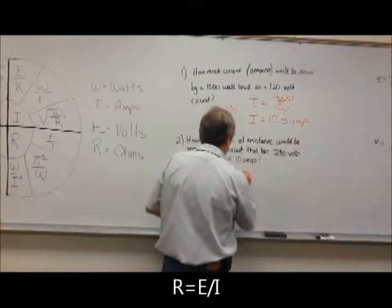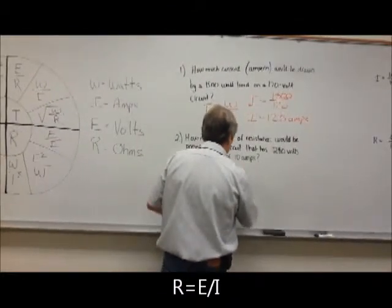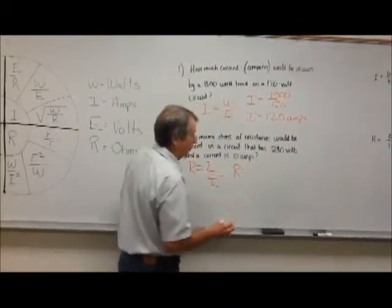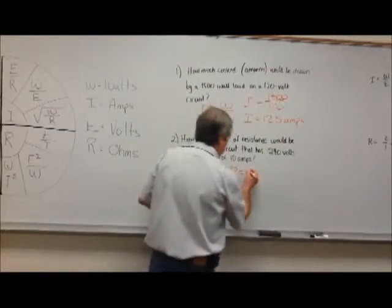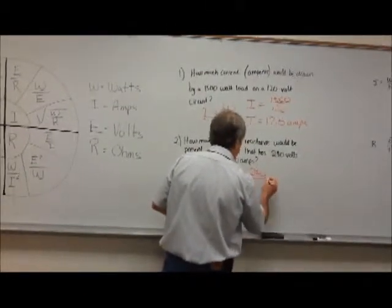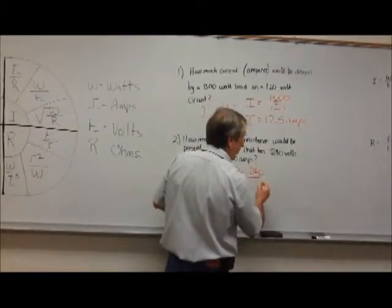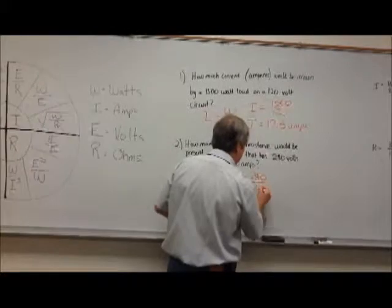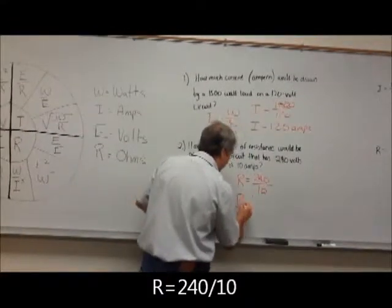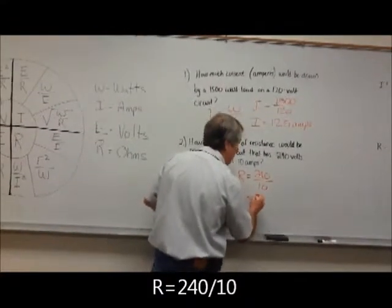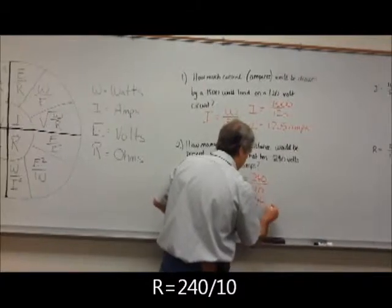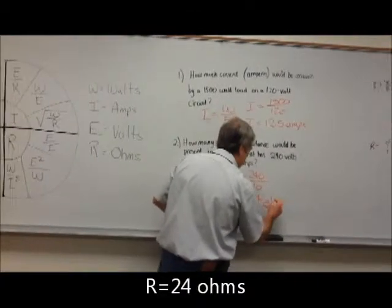Our resistance is going to be equal to 240 volts divided by 10 amps. So our resistance is equal to 24 ohms.